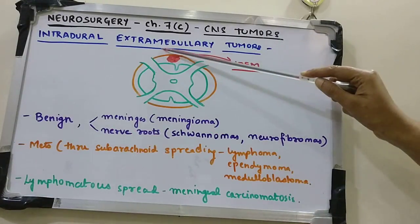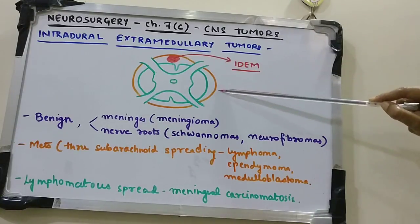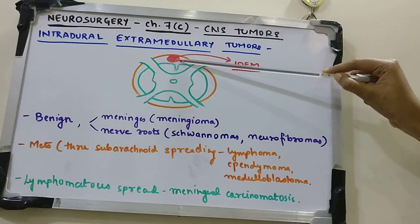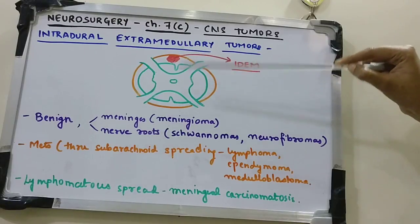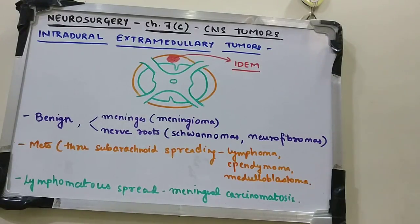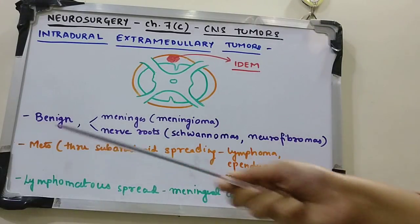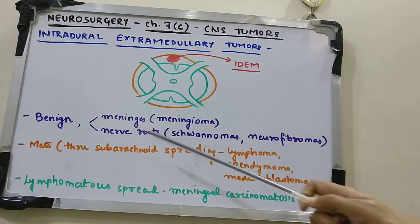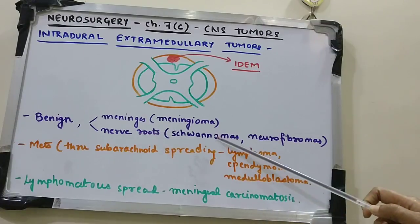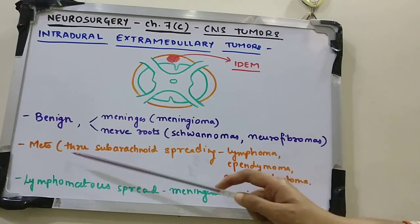Intradural extramedullary (IDEM) tumors are located within the dura but outside the substance of the spinal cord. Most are benign and arise either from the meninges — giving rise to meningiomas — or from the nerve roots, causing schwannomas and neurofibromas. IDEM tumors can also be metastatic.